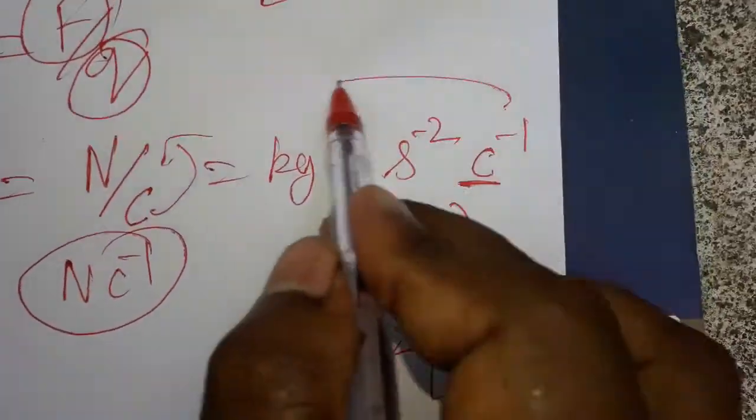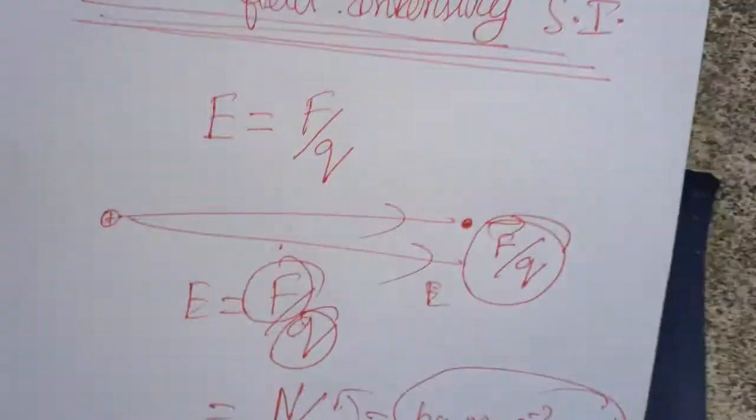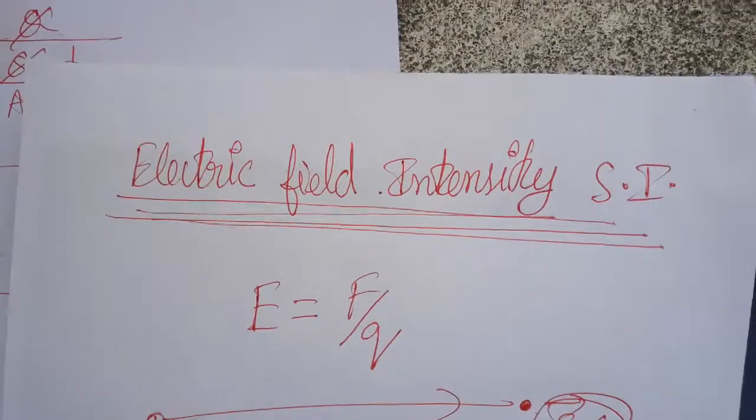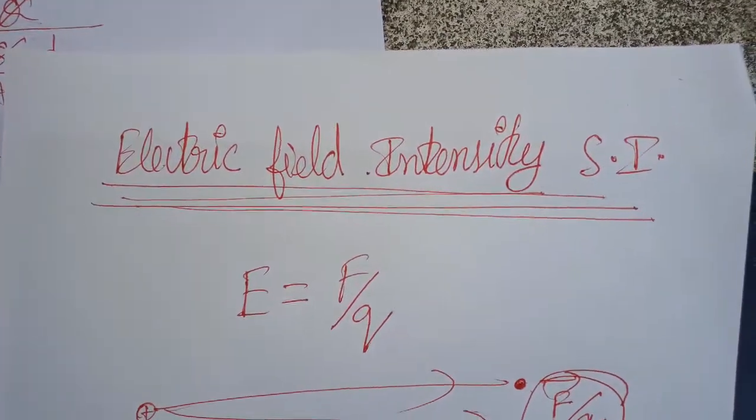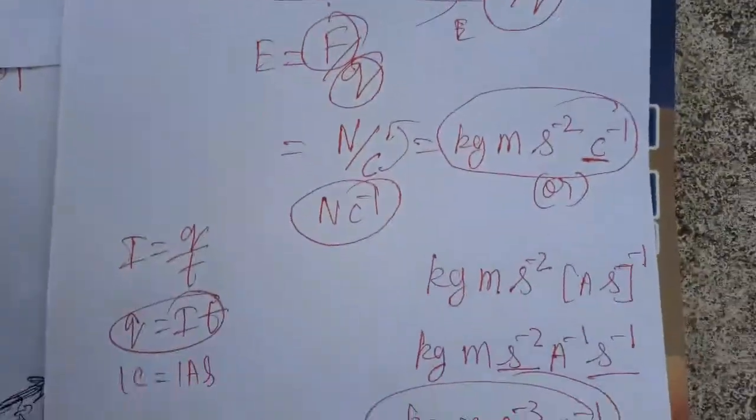So this is also a valid SI unit. Newton·Coulombs⁻¹ is one unit, and kg·meter·second⁻³·Ampere⁻¹ is another unit. Today we learned what is the electric field intensity SI unit. Thank you.